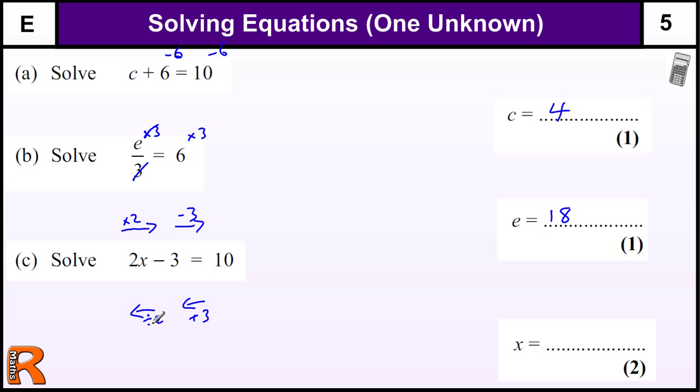So 10 plus 3 is 13, divided by 2 is 13 over 2, which is going to be 6 and a half. That's one way of thinking about it.